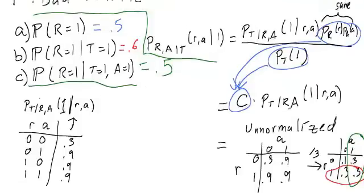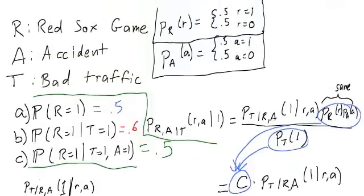only given that there's traffic, what's the probability that there was a game? Well, it's a little higher, because we know games cause traffic. So if there was traffic, then it's reasonable to assume that there was a game. So the probability goes up. But we know that both games and accidents cause traffic.